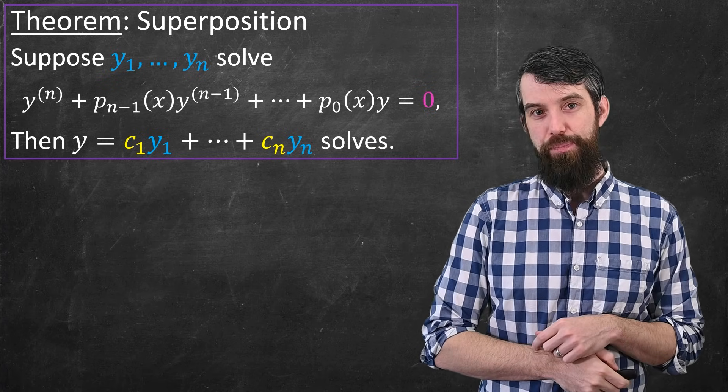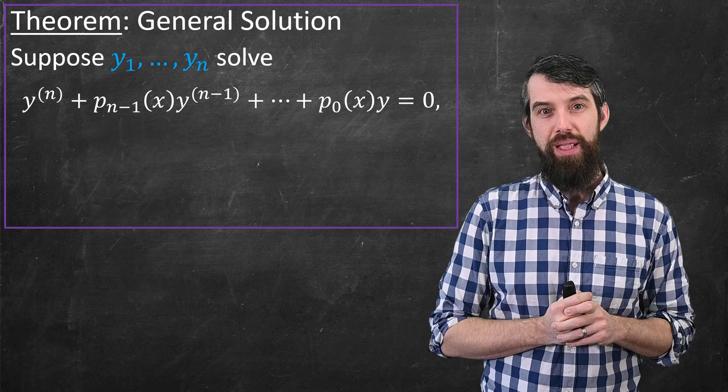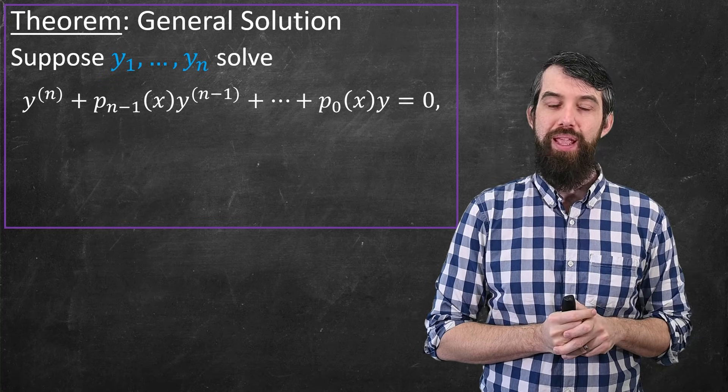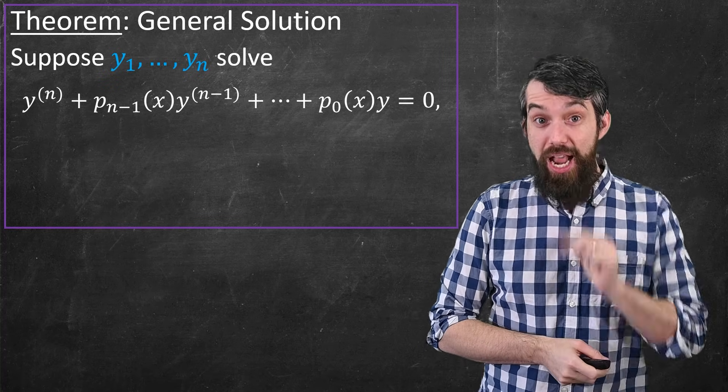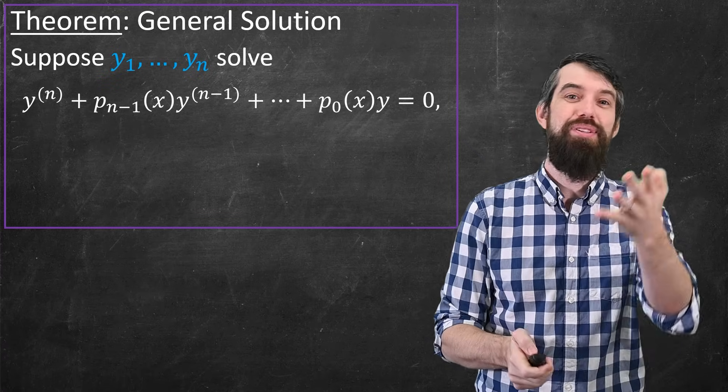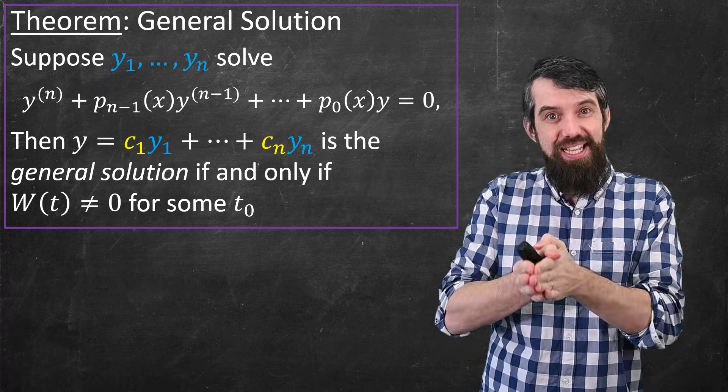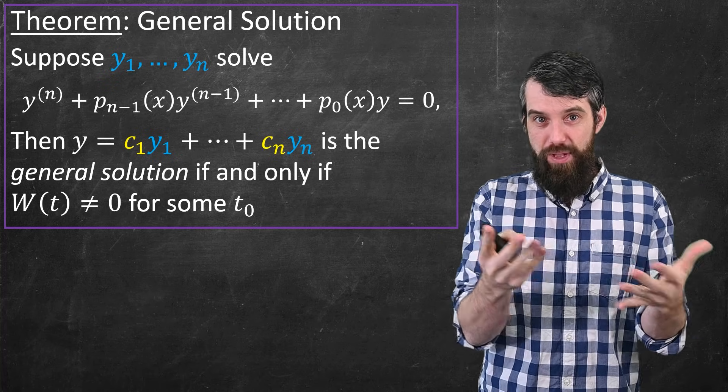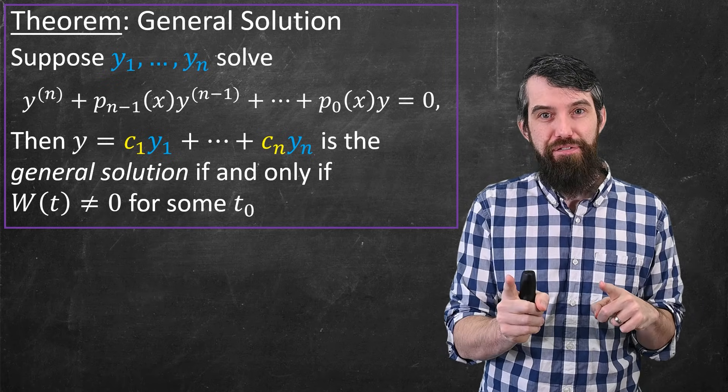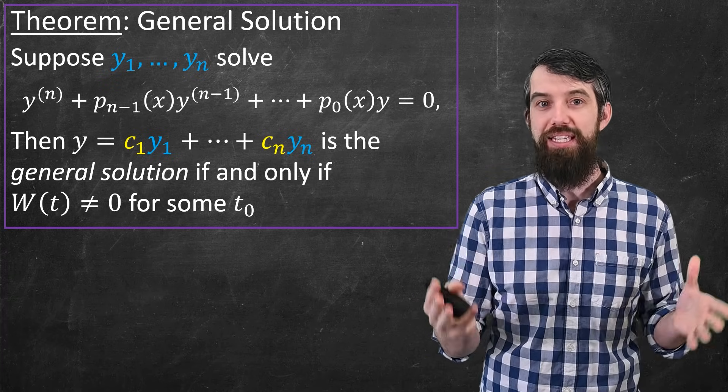Okay, so now we get to the most important piece, and it's the following. I call it the general solution theorem, and it says the following. Suppose you have n solutions to this nth order linear differential equation. Then my claim is that this is enough. This is enough to describe every possible solution provided some statement about the Wronskian. That is, the linear combination c1y1 down to cn yn is the general solution. General solution means any solution can be written in this way. And that is true if and only if the Wronskian of the y1 down to the yn is non-zero at some point, some point t0.